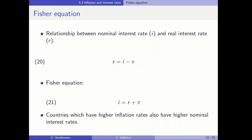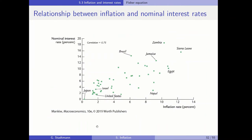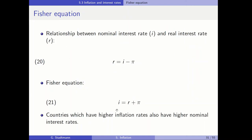We can also look at how the empirical evidence looks. In this scatter diagram, the inflation rate is on the horizontal axis and the nominal interest rate is on the vertical axis. There is a positive relationship: countries with a higher inflation rate also have a higher nominal interest rate, which is perfectly in line with the Fisher equation.